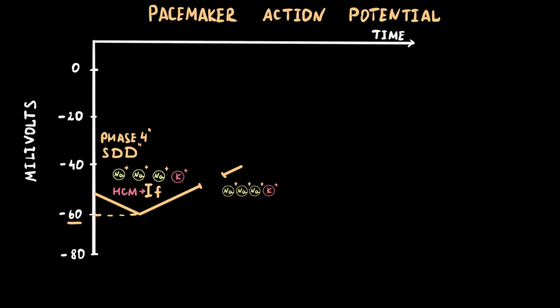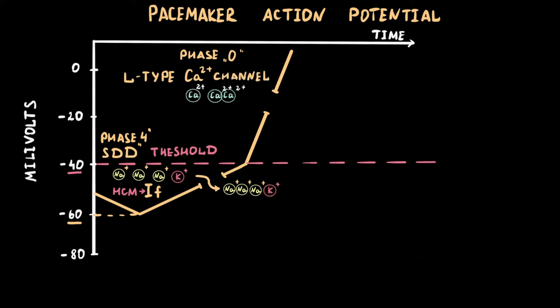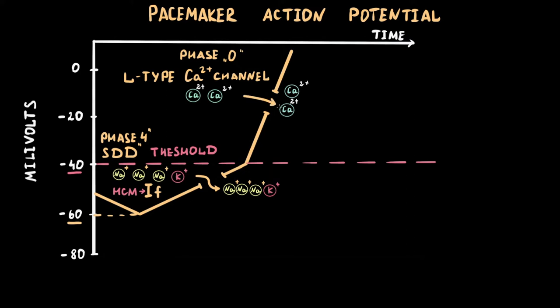Positive sodium and potassium ions enter the cell and the membrane becomes less negative. When the spontaneous diastolic depolarization reaches minus 40 mV, the L-type voltage-gated calcium channel opens and phase 0 starts. Calcium goes inside the cell, causing the upstroke of the action potential, or depolarization. Phases 1 and 2, which are present in working myocardial cell action potentials, are absent in pacemaker action potentials.